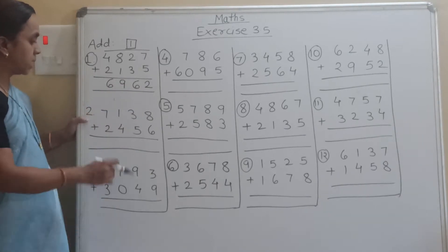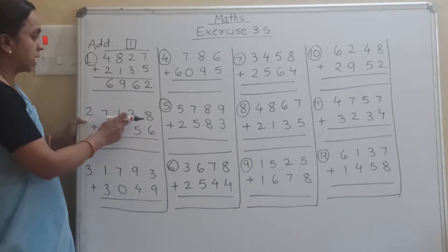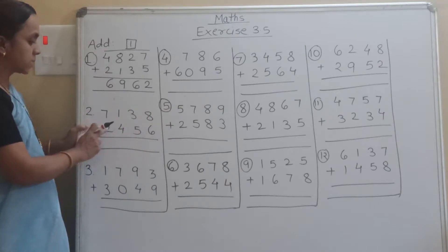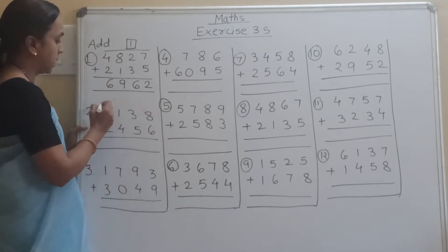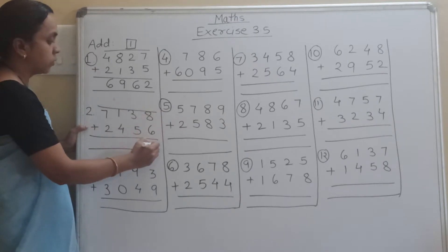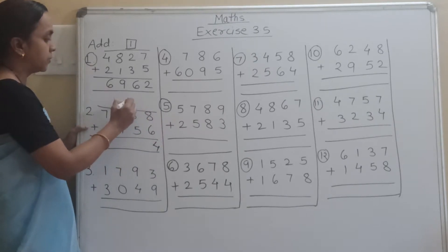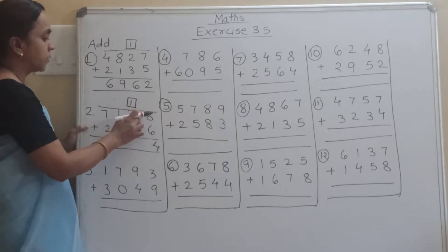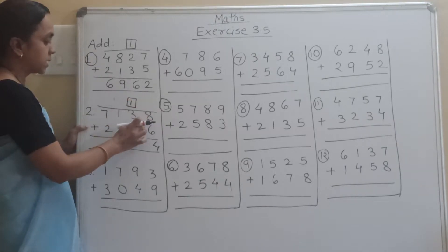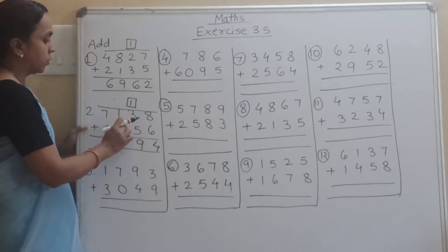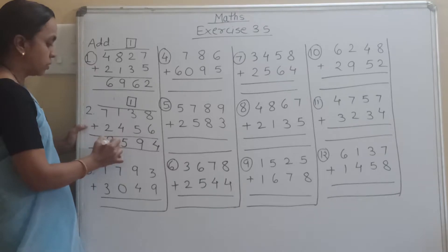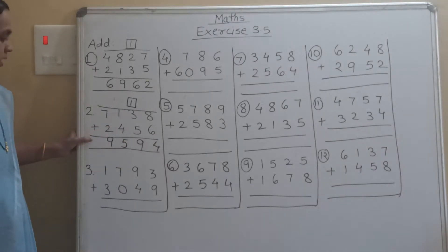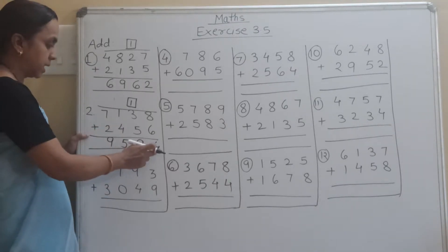Now the second example is 7138 plus 2456. So 8 plus 6 is 14, carry 1. Write down the carry in the small box. Then 3 plus 1 is 4, 4 plus 5 is 9, 4 plus 1 is 5, 7 plus 2 is 9. So the answer is 9594.